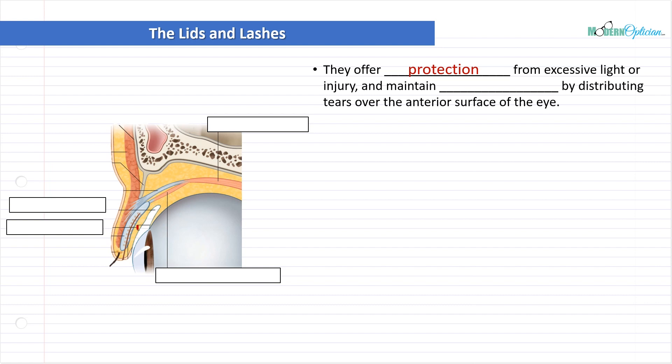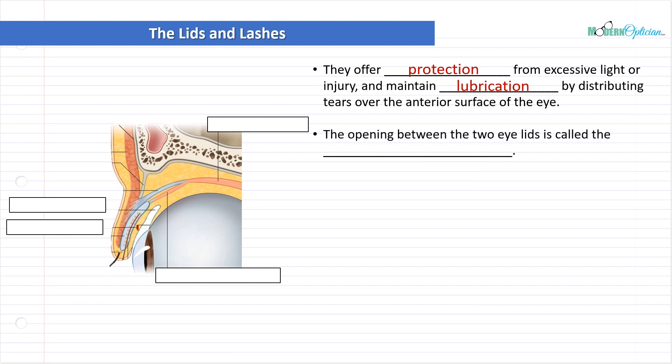The lids close involuntarily — you don't have to think about it, they do it on their own. They also maintain lubrication by distributing tears over the anterior surface, which we talked about when we covered tears and the lacrimal apparatus. The opening between the two eyelids is called the interpalpebral fissure. The word palpebra or palpebral always refers to eyelids — that's an important thing to understand.